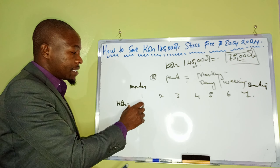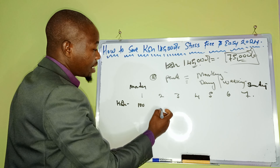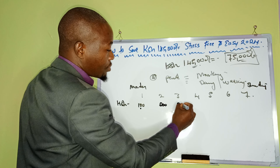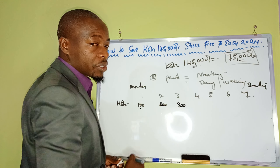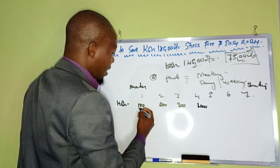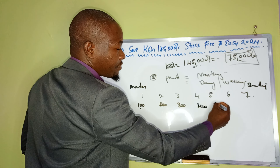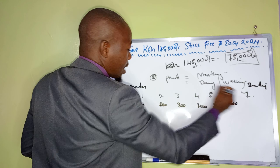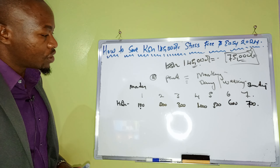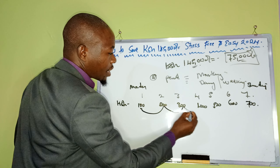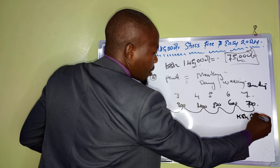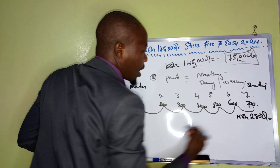On Tuesday you double to 200. Then you multiply by the corresponding day number: day 3 is 300, day 4 is 400, day 5 is 500, day 6 is 600, day 7 is 700. If you add all these together, you end up with 2,800 Kenyan shillings at the end of the week.